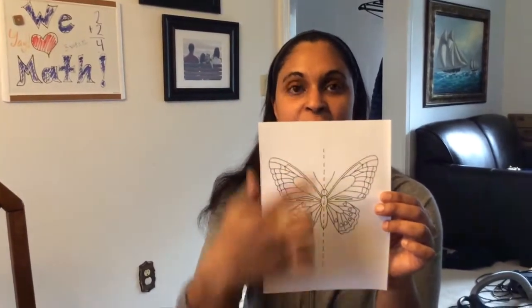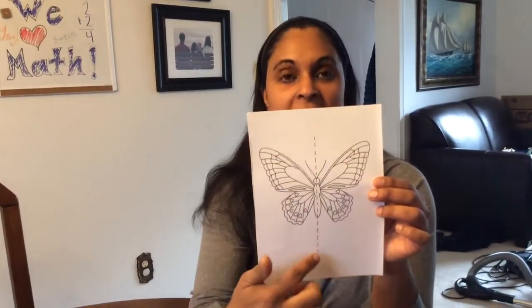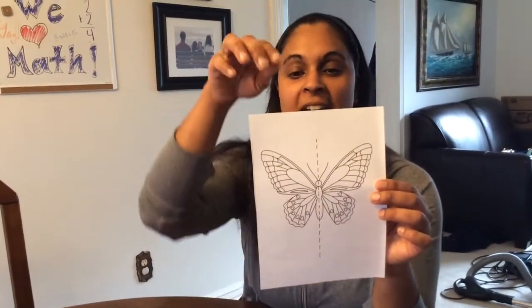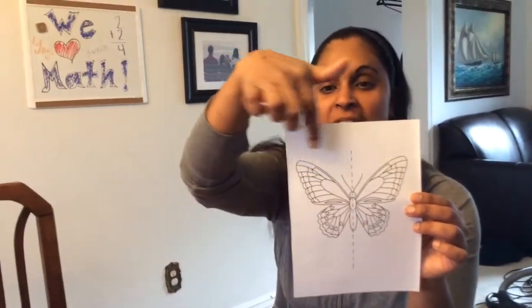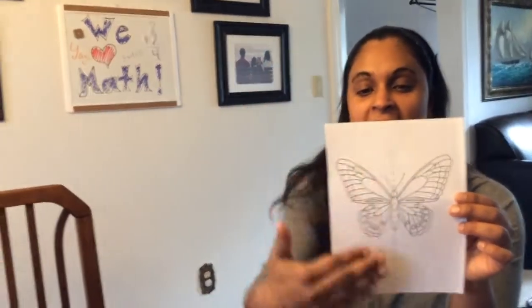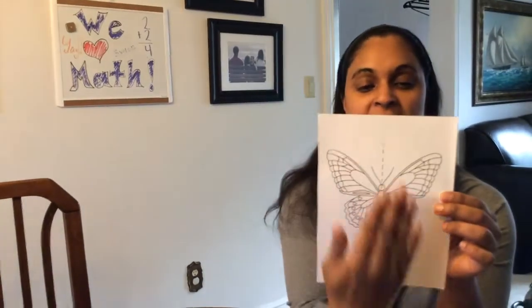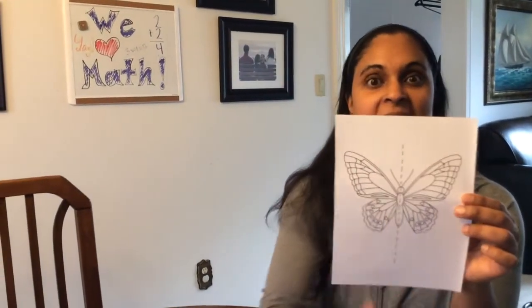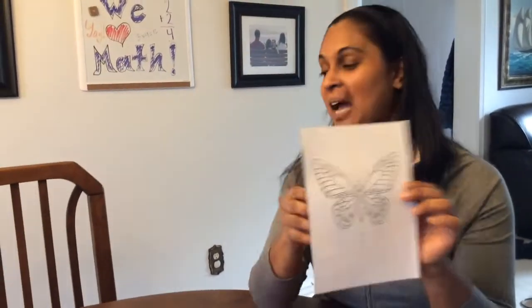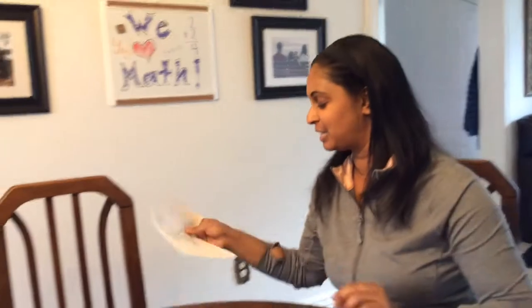There's my line of symmetry down the middle, and if I look on this side I can see the same image as I'm seeing on that side. And again, that's what you're looking for — those matching parts.